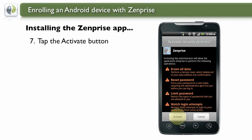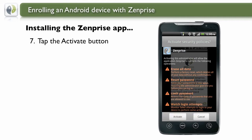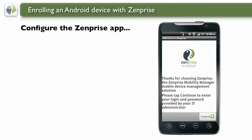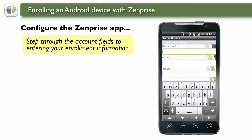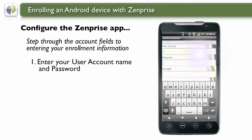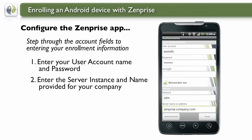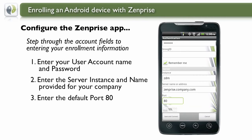Now you can tap the Activate button to initialize the application, and then tap Continue to the next step. Now you're ready to finish by stepping through the account fields and entering your own personal enrollment information. Begin with your user account name and password — this is typically your Active Directory account. Next, enter your server name and port provided by your IT department.